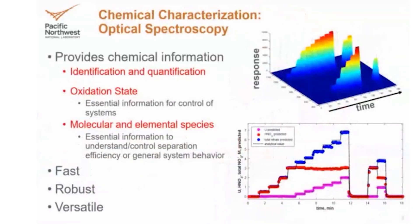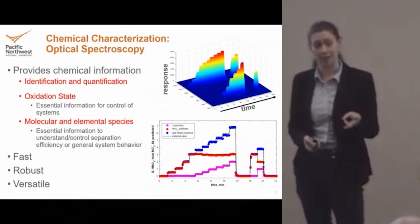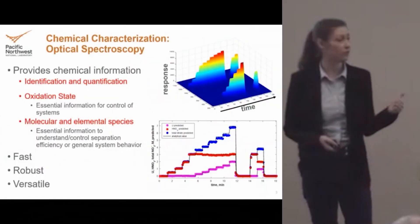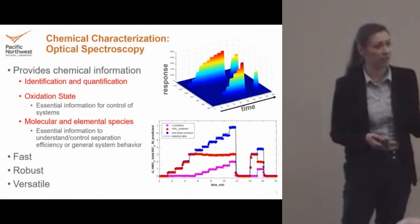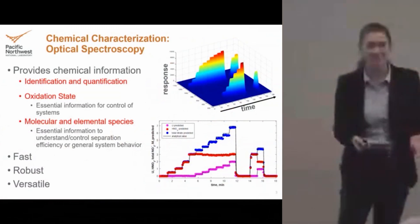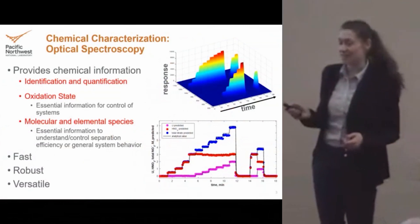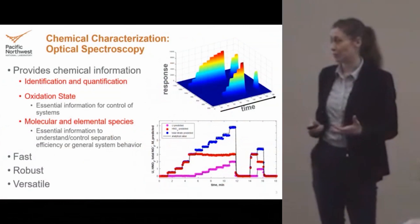When we start talking about online monitoring, there are a lot of different flavors — a lot of different types of questions that online monitoring can seek to answer. On our team, we tend to focus on chemistry questions: Is uranium present? How much uranium is there? What oxidation state is it in? What type of speciation is it exhibiting? Is it interacting with other species in the system that it should or should not be?